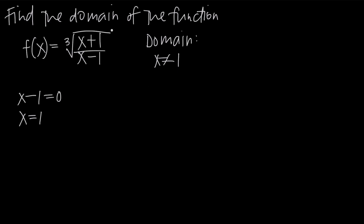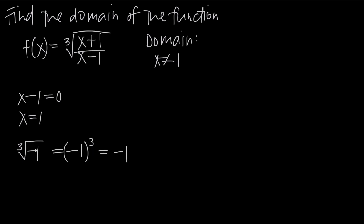We also have this square root to deal with, and it's actually a third root because we're taking the third root of this fraction. Normally we can't have a negative number inside of a square root sign because we can't take the square root of a negative number. But in this case, because we have the third root, we can have a negative number inside. If we're taking the third root of negative 1, we're looking for the value that when multiplied by itself three times gives us negative 1, and of course that would be negative 1.